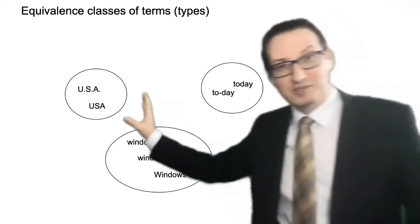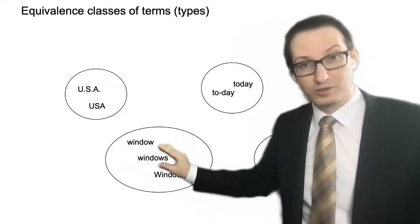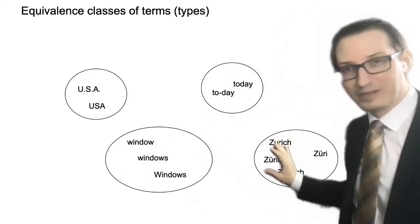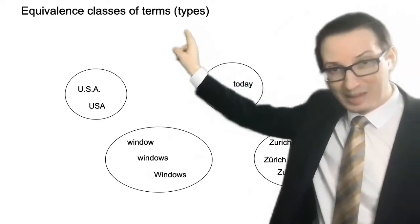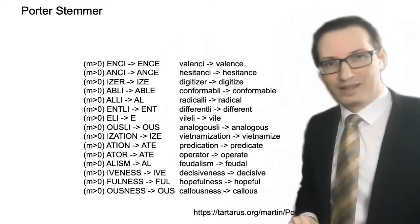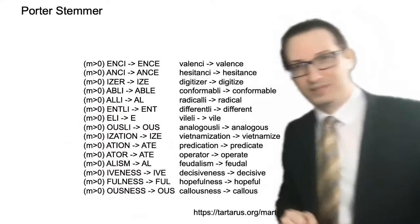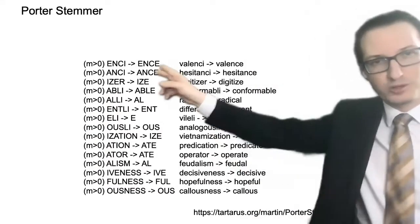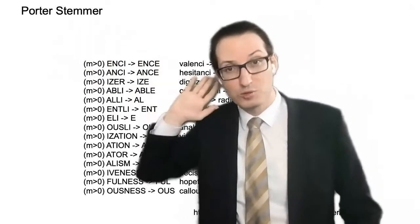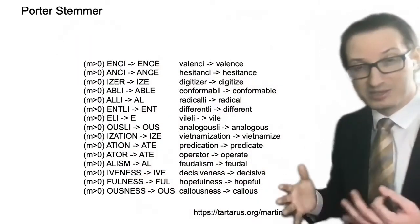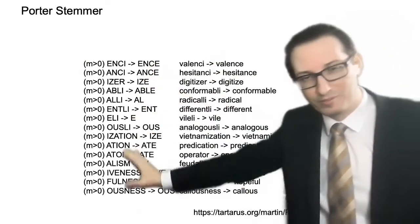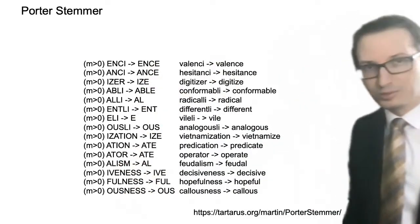Then we saw the equivalence classes. This is when you want to group together the words that kind of belong together in terms of querying, right? And this is what we call the types, right? And then the type will give you a term in the actual index structure. Then we looked into stemming, which is the Porter stemmer. That's an extremely popular way of building these equivalence classes by actually chopping the end of the word with some very mechanical set of rules.